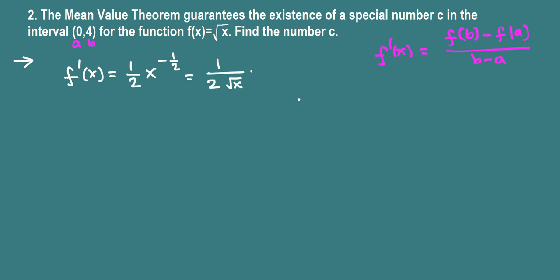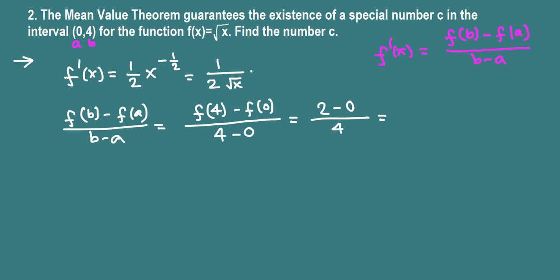Now the other half is slope of the secant line. That's f(b) - f(a) over b - a. Let's find this: b - a is 4 - 0 = 4. f(4) = √4 = 2, and f(0) = √0 = 0. So we have (2 - 0)/4 = 2/4 = 1/2.